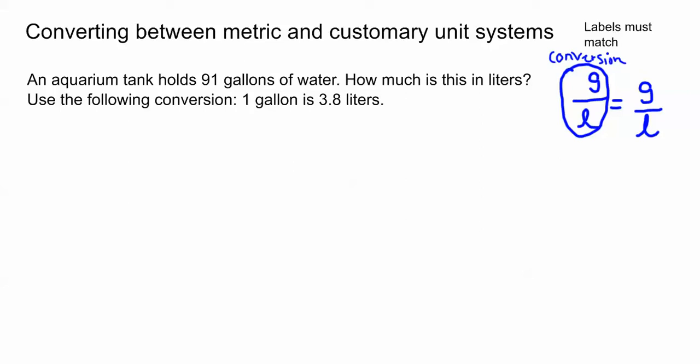To answer these types of questions I like to use a proportion because you're comparing the ratio between gallons of water and liters of water. So over here you see my proportion set up, G representing gallons and L representing liters.